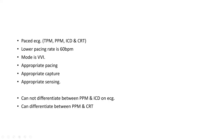How to write this ECG: this is a paced ECG, the lower pacing rate is 60 beats per minute, the mode is VVI because the chamber being captured is the ventricle, there is appropriate pacing, appropriate capture, and appropriate sensing. Importantly, you cannot differentiate between PPM and ICD on ECG because both pace in the same fashion, but you can differentiate between PPM and CRT on ECG.